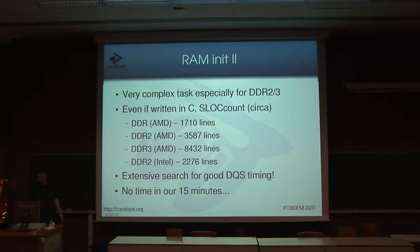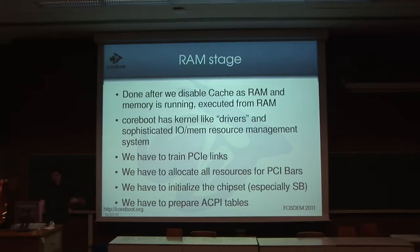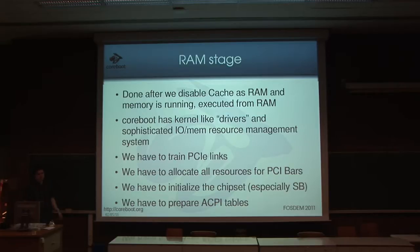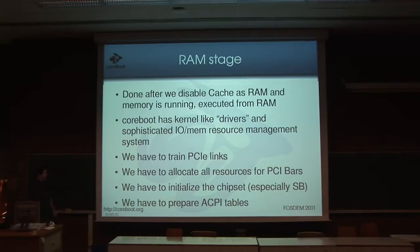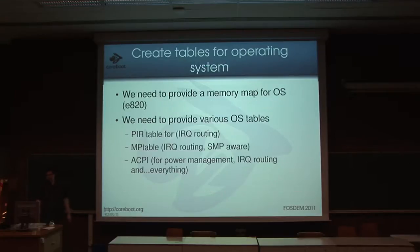Then the RAM stage is executed. In the RAM stage we copy coreboot to the second stage and run from RAM. In this stage we have to train the PCIe link and do all the resource enumeration on the PCI bus — like setting up IO ports and such. We also prepare tables required by the operating system, plus ACPI and power management and so on. A lot of stuff still needs to be done after RAM is running.